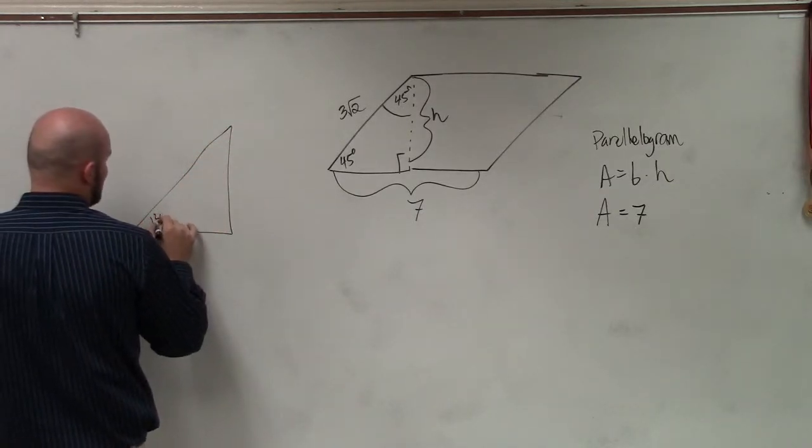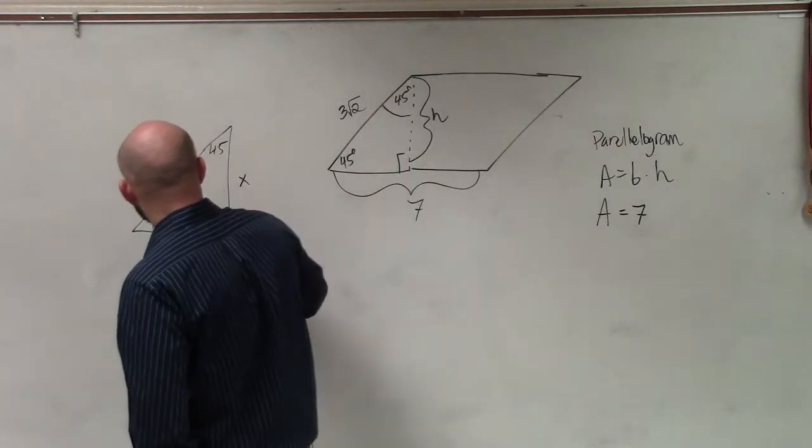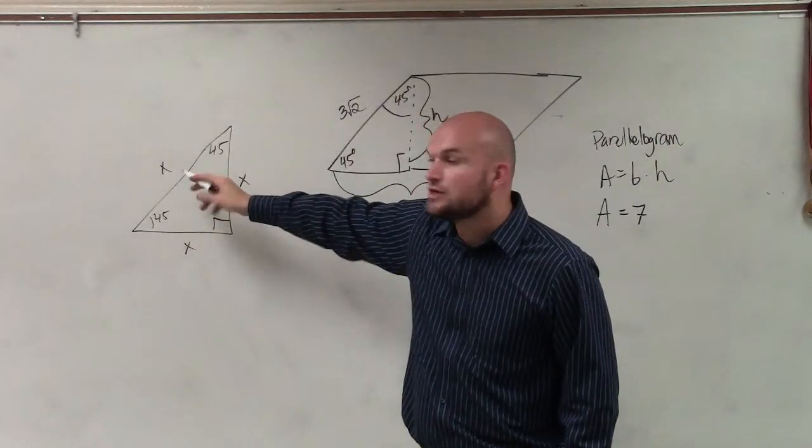So if this is a 45, 45, 90 triangle, and this is X times X times what do you multiply X times here? Does anybody remember? Square root of 2.